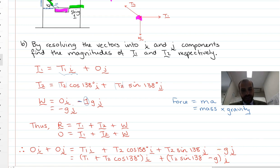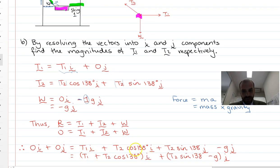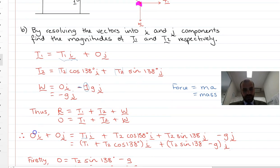And now we can add those components together. So we've got two i components. We've got tension 1 plus tension 2 cos 138 equals i. And we've got tension 2 sine 138 minus g equals j. Alright.